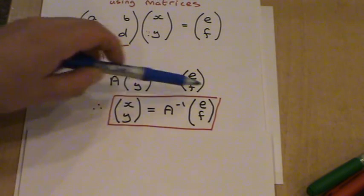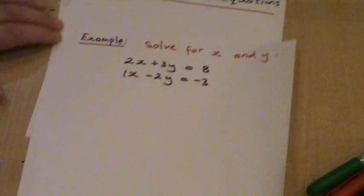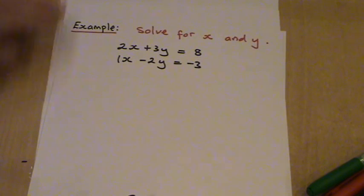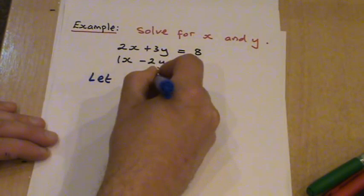So this is what we're generally going to use to solve a system of two equations with two unknowns using matrices. If we look at this example here, we want to solve for x and y. Now here we've got 2x plus 3y equals 8, and we've got 1x minus 2y equals minus 3.